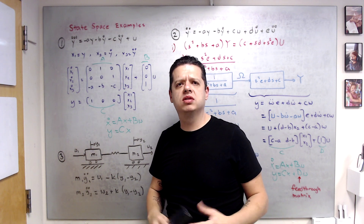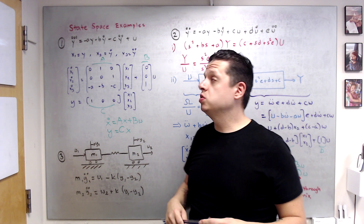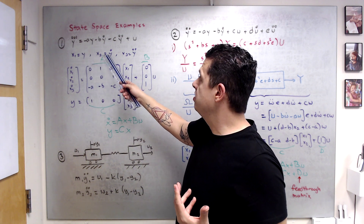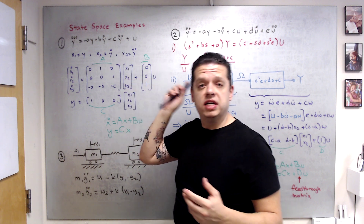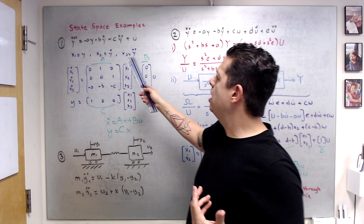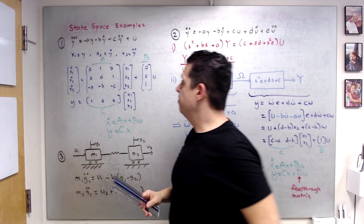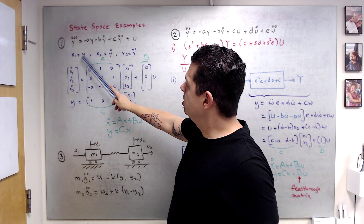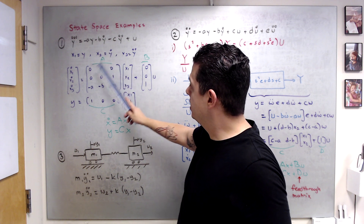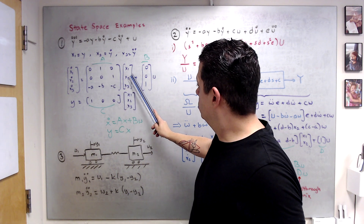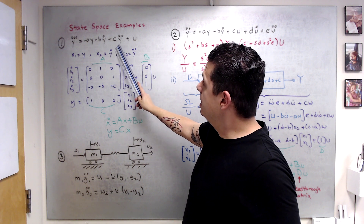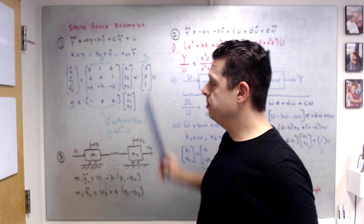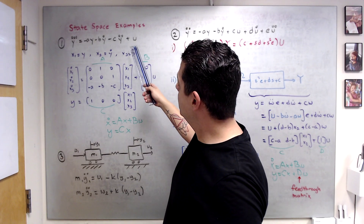You need to have all the derivatives of y up to one less than the highest order. The order of assignment doesn't matter — you could choose x1 as y-double-dot, x2 as y, x3 as y-dot. I usually start with the lowest order: x1 equals y, x2 equals y-dot, x3 equals y-double-dot. So x1-dot equals y-dot, which is x2, and x2-dot equals y-double-dot, which is x3.